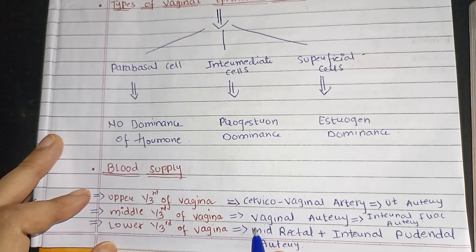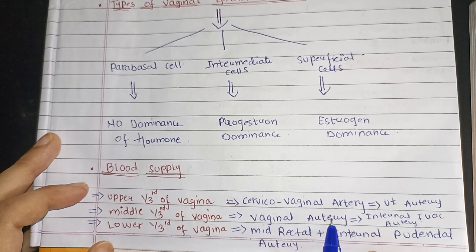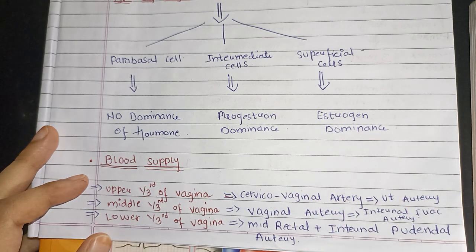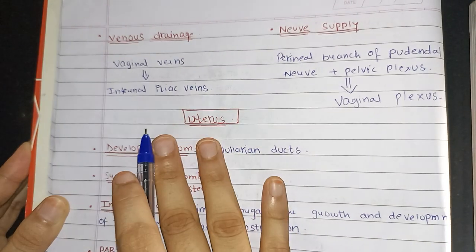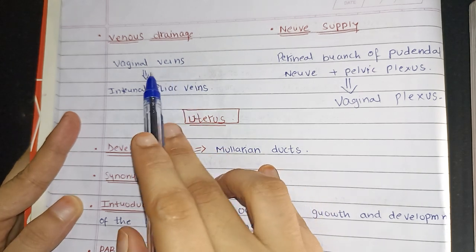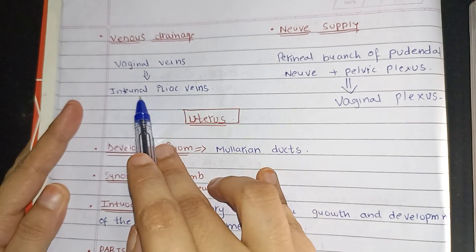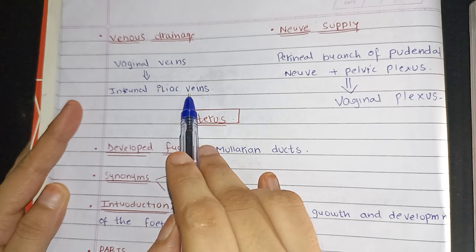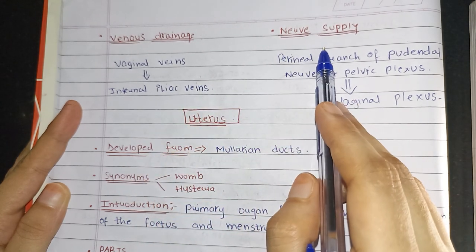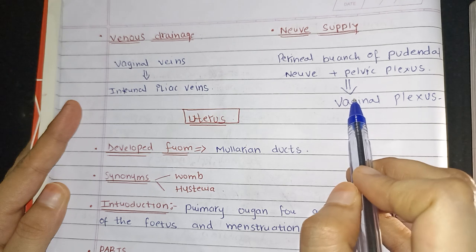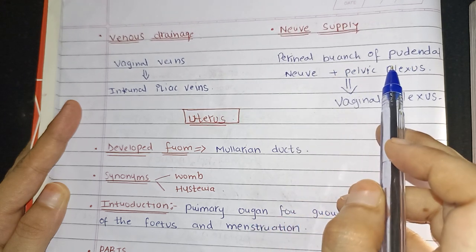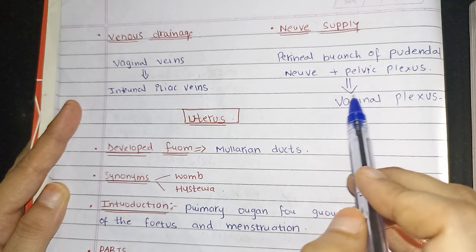One thing I want to make clear: the vaginal artery is a branch of the internal iliac artery. Now coming to its venous drainage — the venous drainage is through the vaginal vein, and it is a branch of the internal iliac veins. The nerve supply is through the vaginal plexus, or the perineal branch of the pudendal nerve, plus the pelvic plexus — you can write vaginal plexus.